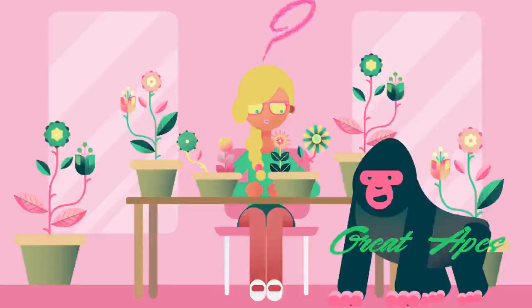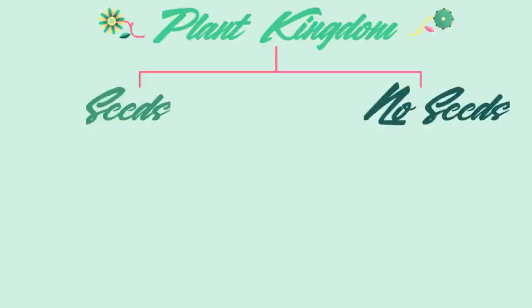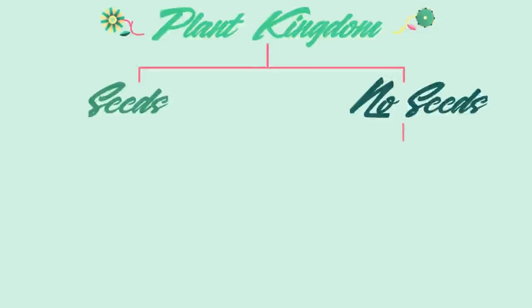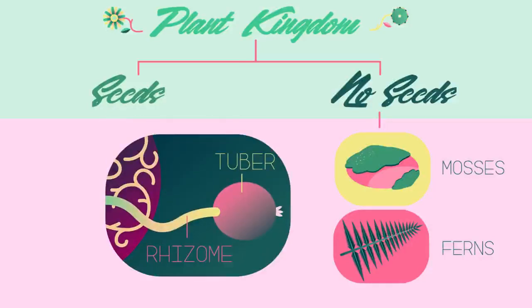So how are plants classified? The plant kingdom can be split into plants with seeds and plants without seeds. Not every plant grows from a seed — ferns and mosses, for example, grow from spores instead.